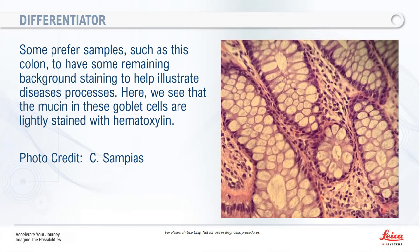With differentiation, tissues like colon require careful consideration. Depending on what you're looking at and who's reviewing it — for GI samples where goblet cells are really important — some folks adjust their differentiation time to a progressive stain specifically to preserve the blue staining of the mucin in the goblet cells.